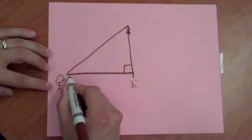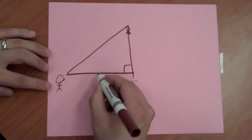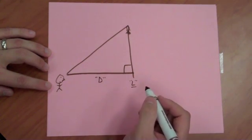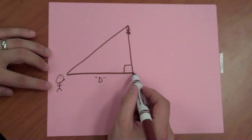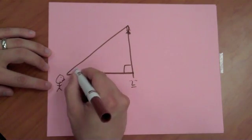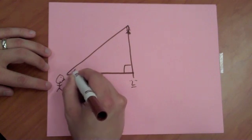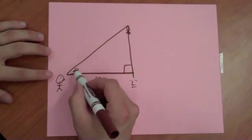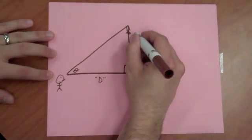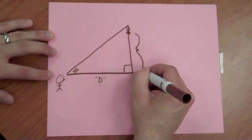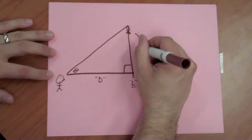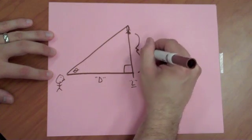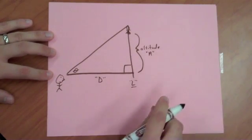This distance from you to the launch pad we're going to call D. That's your distance, and we can measure that with a tape measure. This angle here, theta, we have a device, an altitude finder, which you're going to learn how to use. But we can find that angle pretty easily. Our third value then is going to be our altitude, which I'll abbreviate A.